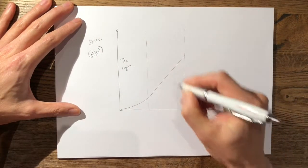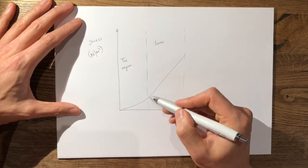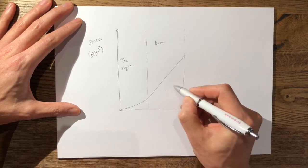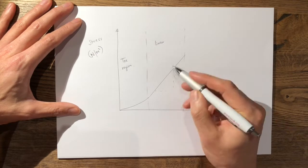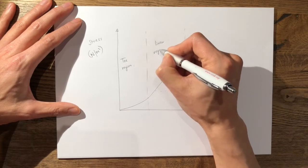Now this portion of the curve exhibits Hooke's law of proportionality so you can work out the Young's modulus at this point of the curve. So this is the linear region.